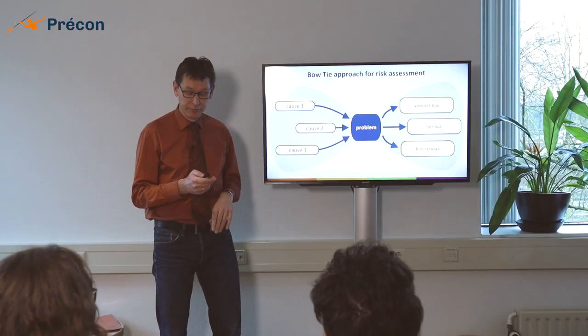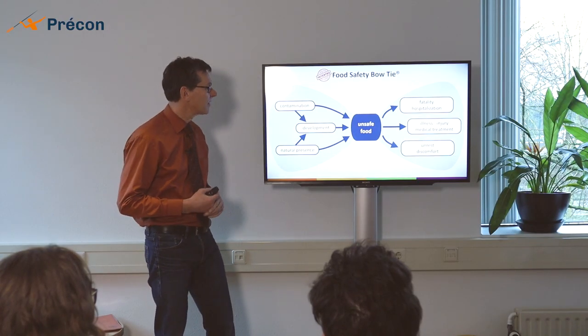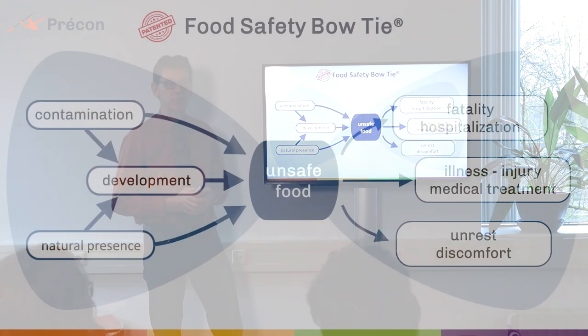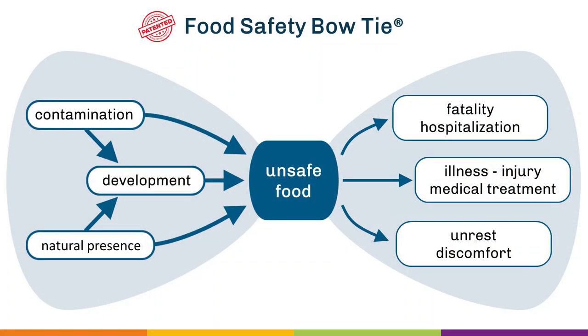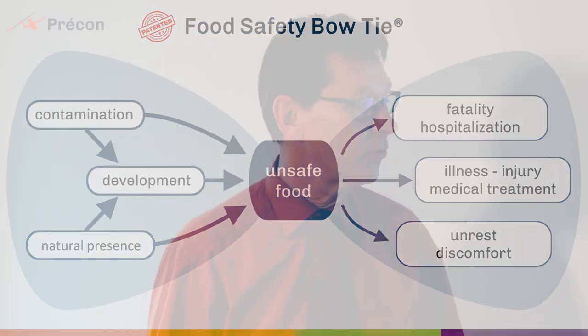When we apply this model to food safety then it will look like this. In the center we have unsafe food. Consequences can be that people end up in hospital or maybe even fatalities. People might need medical treatment in the center or in less serious occasions there might be unrest or there might be discomfort. So these are the consequences.